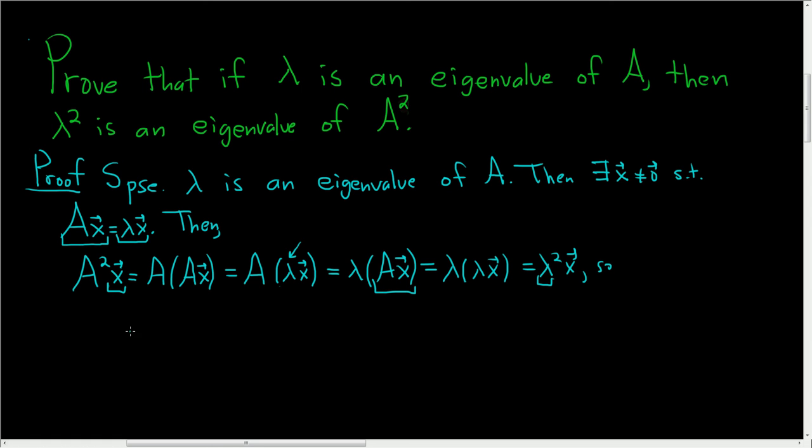So that's precisely what it means for lambda squared to be an eigenvalue. So it is an eigenvalue of A squared. And that's it.